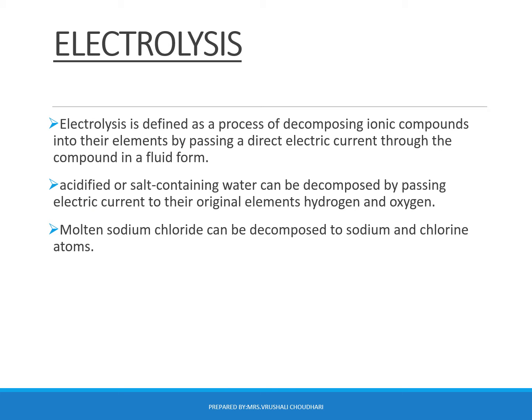We are going to learn about electrolysis. What happens in electrolysis? We pass electric current through an electrolytic solution. Due to that, a chemical reaction takes place causing a change in the composition of the electrolyte. The process of converting electric energy into chemical energy by decomposing ionic compounds into their elements by passing direct electric current through an electrolyte is called electrolysis.